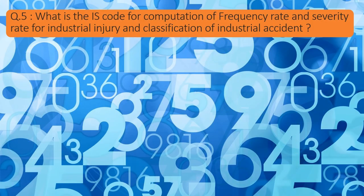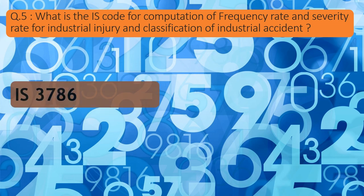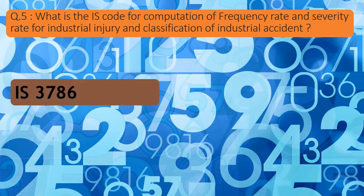Question number 5: What is the IS code for computation of frequency rate and severity rate for industrial injury and classification of industrial accidents? That is IS 3786, recently amended in the year 2021.